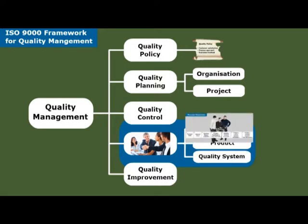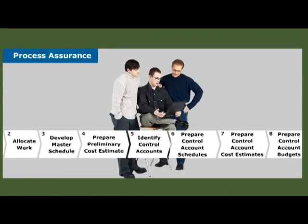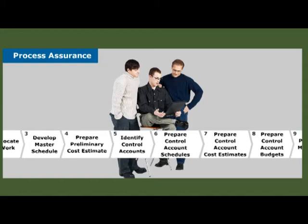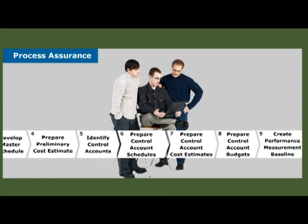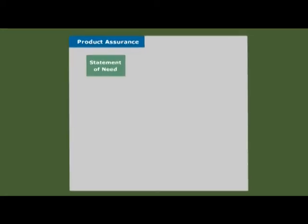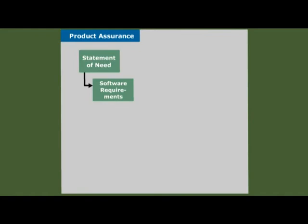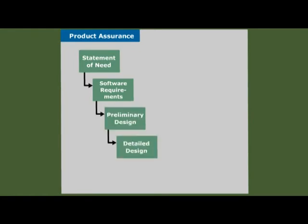Process assurance checks that our development procedures and practices are documented and being followed. Product assurance demonstrates, as our product is being built, that it will meet the customer's requirements.